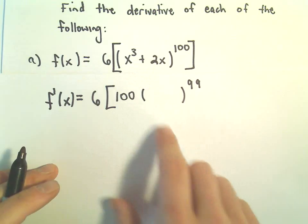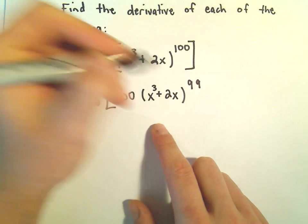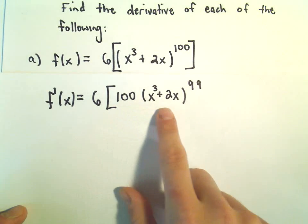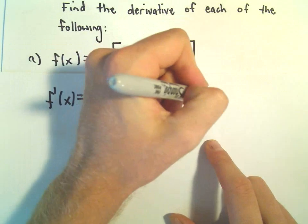Well, we don't just have x, but we just leave all of that part alone. The 100 will come out front. We'll leave all the stuff on the inside alone. We'll take one away from the exponent.